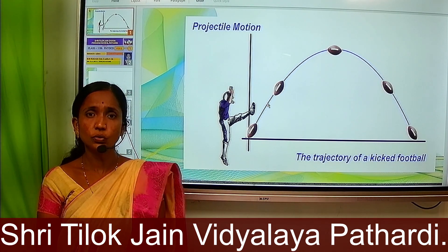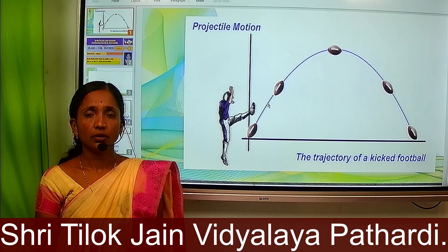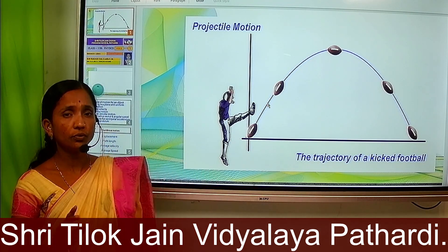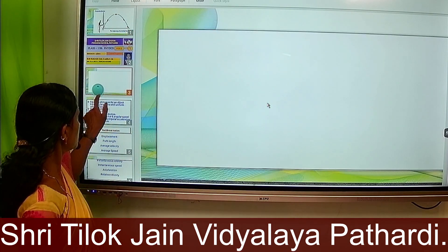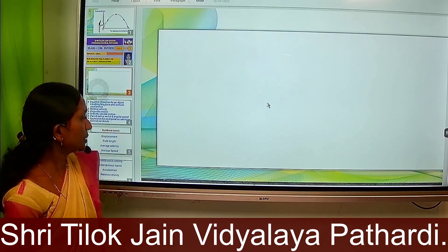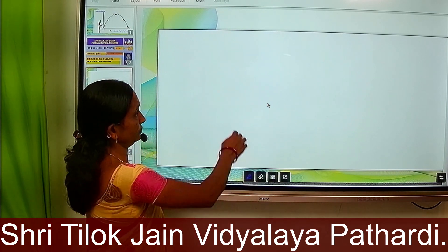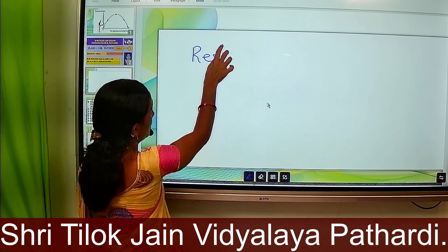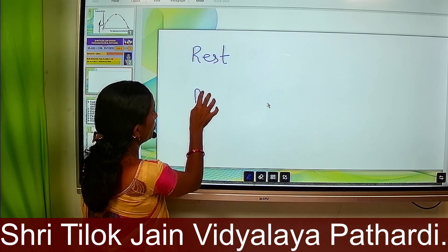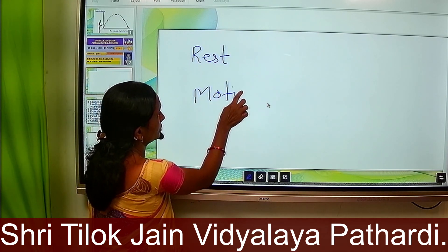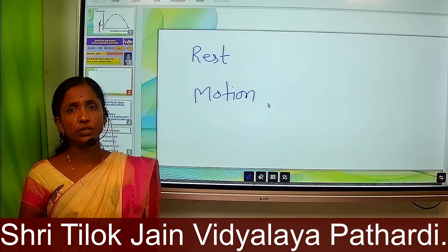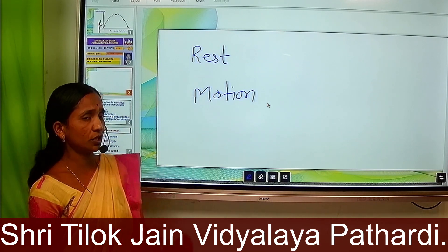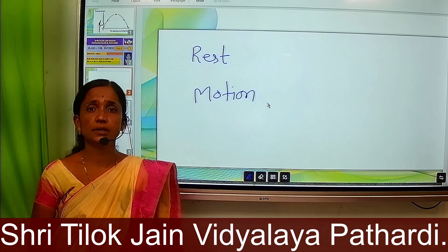We know that the positions of an object are of two types: one is the rest position and another is the motion position. An object can either be at rest or in motion.